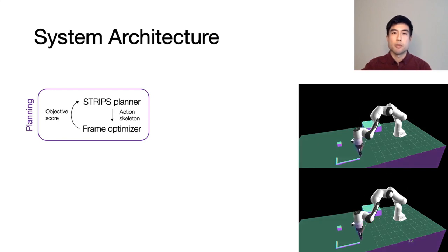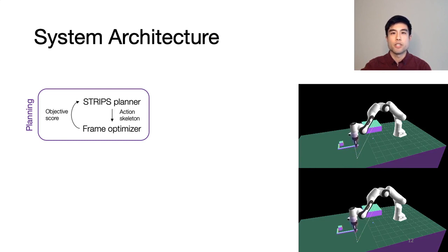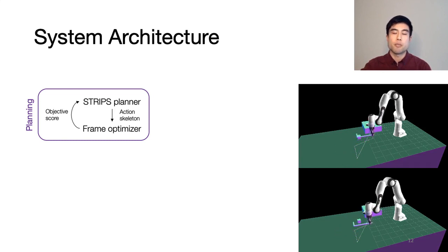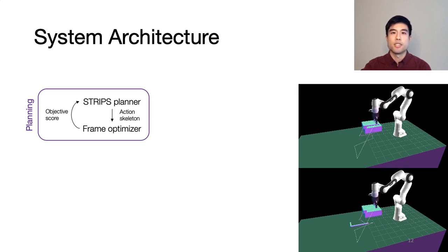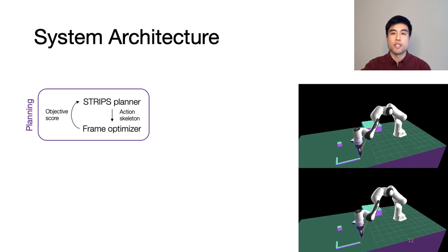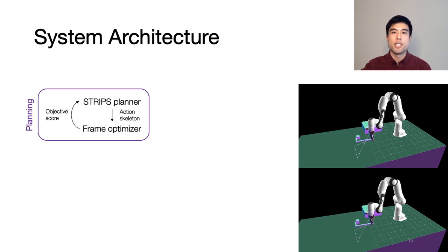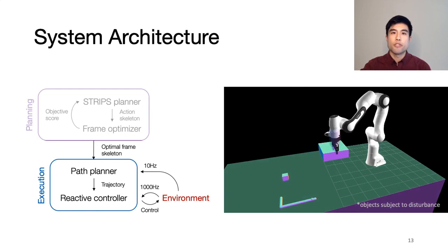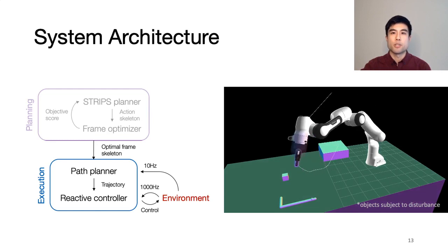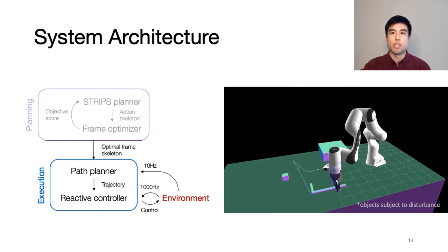Here we go back to the pick and place problem, with two candidate solutions shown in the videos. To overview the entire planning pipeline, we first start with STRIPS planning, which produces candidate action skeletons. Each skeleton gets sent to the frame optimizer, which determines relative pose variables at key time steps, and sends an objective score for the action skeleton back to the STRIPS planner. The frame skeleton with the lowest objective score gets sent to the execution module, which will then use reactive operational space controllers to handle changes in the environment in real time.